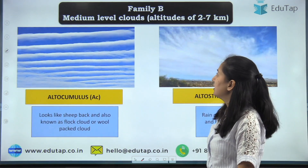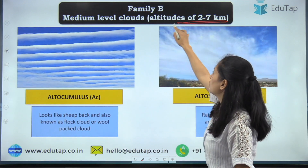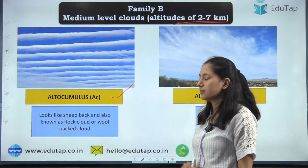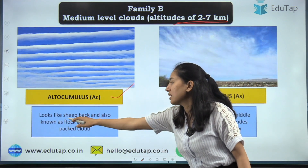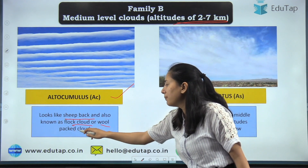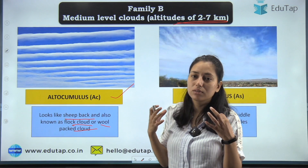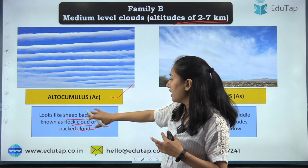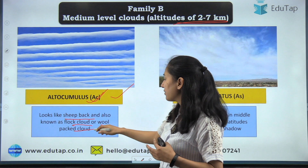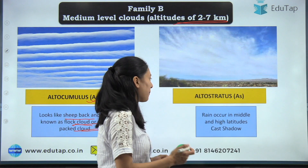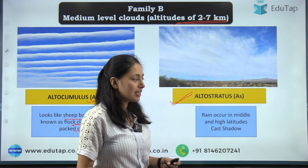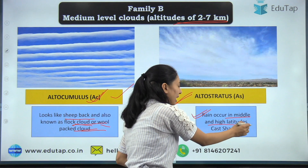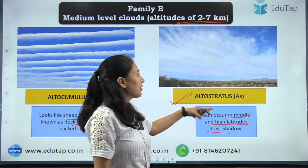Moving on to Family B — medium altitude level 2 to 7 kilometers. The first type is altocumulus: it looks like sheep and is also called flock cloud or bullpack cloud because of the sheep-like appearance. Next is altostratus: these are rain clouds where rain occurs in medium and high latitudes, and they cast a shadow.